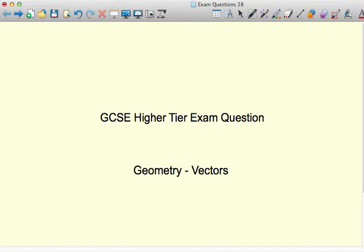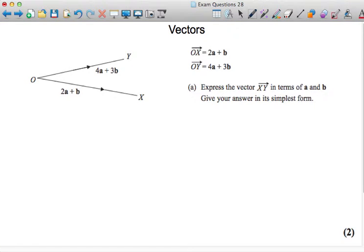Welcome to a GCSE higher tier exam question on vectors. The vector OX equals 2A plus B. The vector OY equals 4A plus 3B. Express the vector XY in terms of A and B. Give your answer in its simplest form.